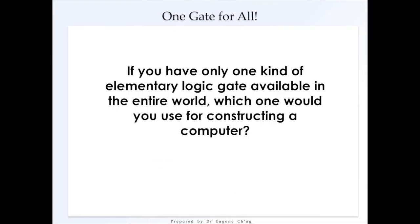So here we are having completed all the elementary logic gates, looking at the behaviors through the truth tables. We've come to this particular question. If you have only one kind of elementary logic gate available in the entire world, which one would you use for constructing a computer? So this is an important question. We need one kind of gate which is able to simulate all other gates. Which means that the particular gate in question should have the property of functional completeness. Which means that any other logic function, the AND or the OR or the XOR, can be implemented using only that particular gate.